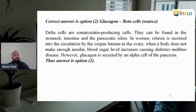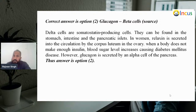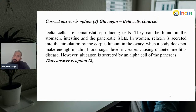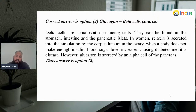Delta cells are somatostatin-producing cells and can be found in the stomach, intestine, and pancreatic islets. Relaxin is secreted into the circulation by the corpus luteum of the ovary. When the body does not make enough insulin, blood sugar levels increase, causing diabetes mellitus. However, glucagon is secreted by alpha cells of the pancreas. So our answer will be second.